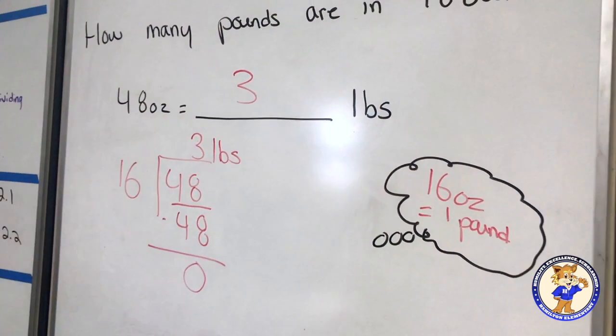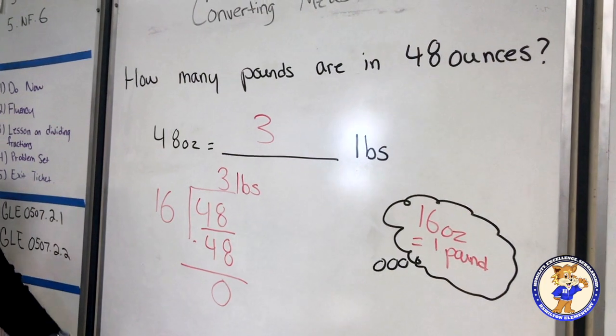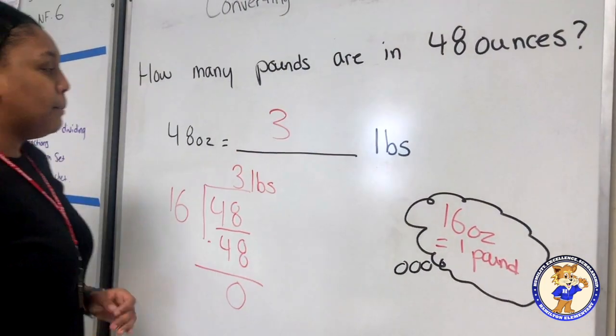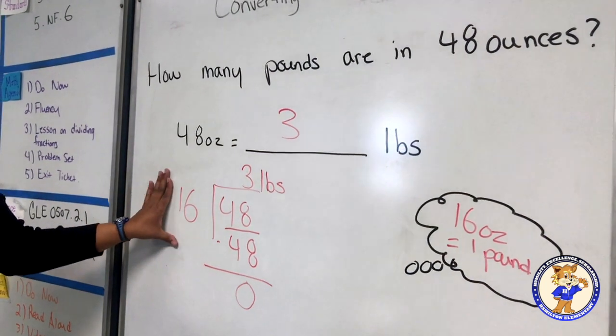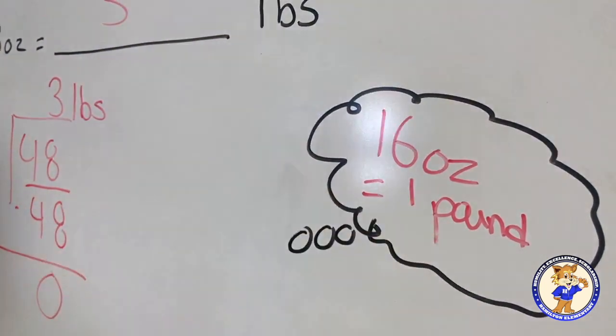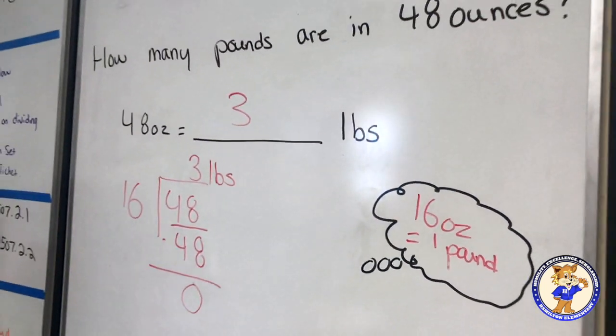And that's how you go from a smaller unit to a larger unit by using division and knowing your measurements, knowing that 16 ounces is equal to one pound. That's all I have for today.